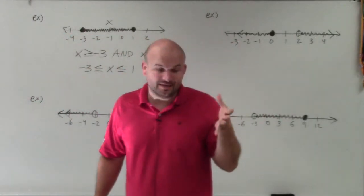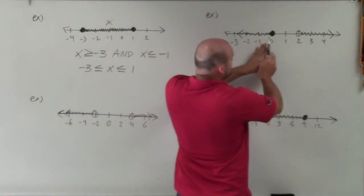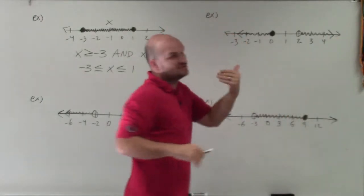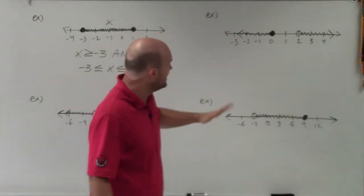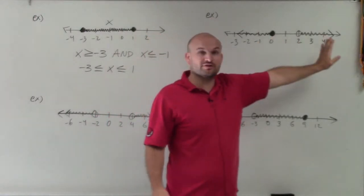Now in this example here, we have a closed, and we have an open point. Now they're also showing up in different, they're also going in opposite directions. What that signals to me is that it's going to be an or conjunction. Instead of an and, it's going to be an or. Because you can have points that are less than 0, or you can have points that are greater than 2.